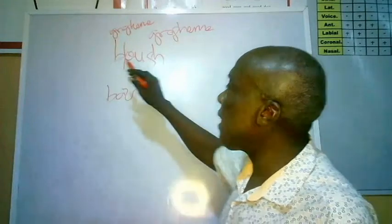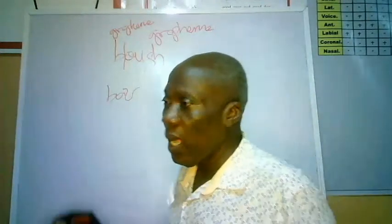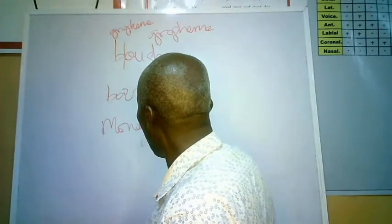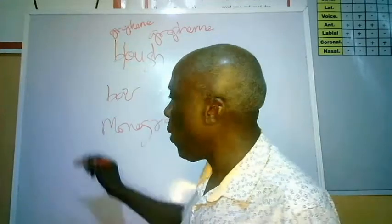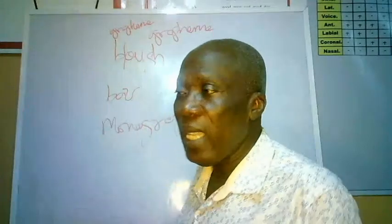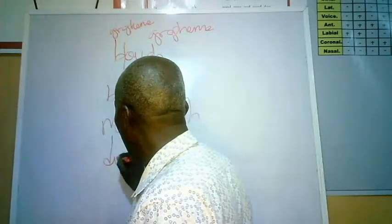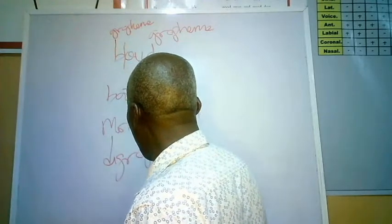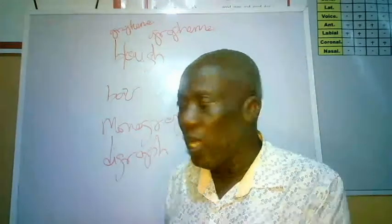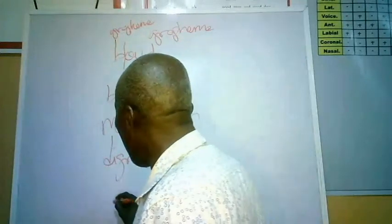Another word by which you can identify such a letter — being only one letter — is monograph. Monograph, because it is one letter. One letter is a monograph. If it is two letters that represent just one sound, then we call it a digraph. If it is two letters representing just one sound, we refer to it as a digraph. If it is up to three letters, then we call it a trigraph.